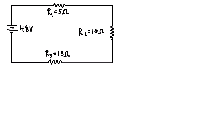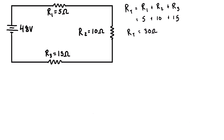To get started, we want to figure out the total resistance of the circuit so we can find the total current. The total resistance RT is equal to the first resistor plus the second resistor plus the third resistor, because these are all in series. That's 5 ohms plus 10 ohms plus 15 ohms, so the total resistance is 30 ohms.